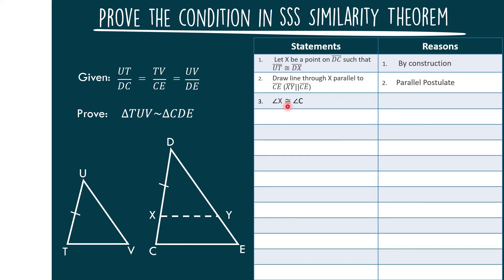Next, statement number 3: Let us say that angle X is congruent to angle C. These two angles are congruent by corresponding angles formed by a transversal cutting parallel lines.